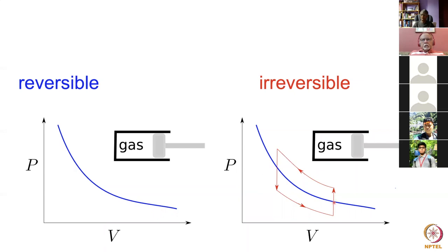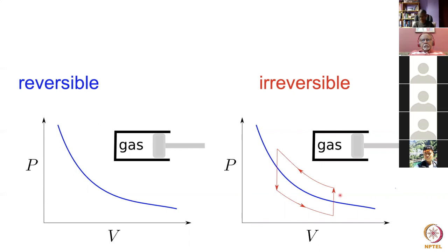In contrast, if I want to decrease the volume with friction between the piston and the cylinder, I have to increase the pressure until friction is overcome, then follow a path where volume decreases as pressure increases. When I reduce the pressure again, to overcome friction I have to go to a much lower pressure than the blue curve, and so on back to the original point. The free energy dissipated is the area within this red loop. A process like this is called irreversible because entropy is being created.